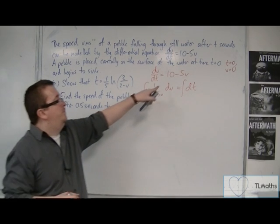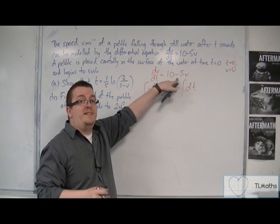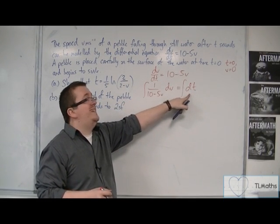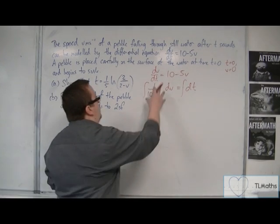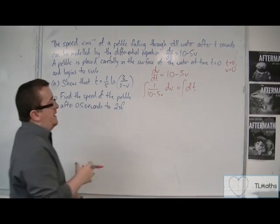So I've divided the right hand side by 10 minus 5v leaving 1. That's why I've just got that dt there. So integrating 1 over 10 minus 5v...